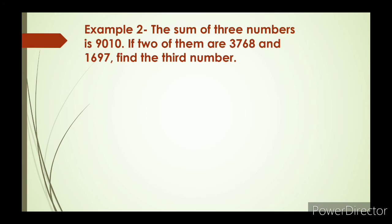Let's see the second example. The sum of three numbers is 9010. If two of them are 3768 and 1697, find the third number.